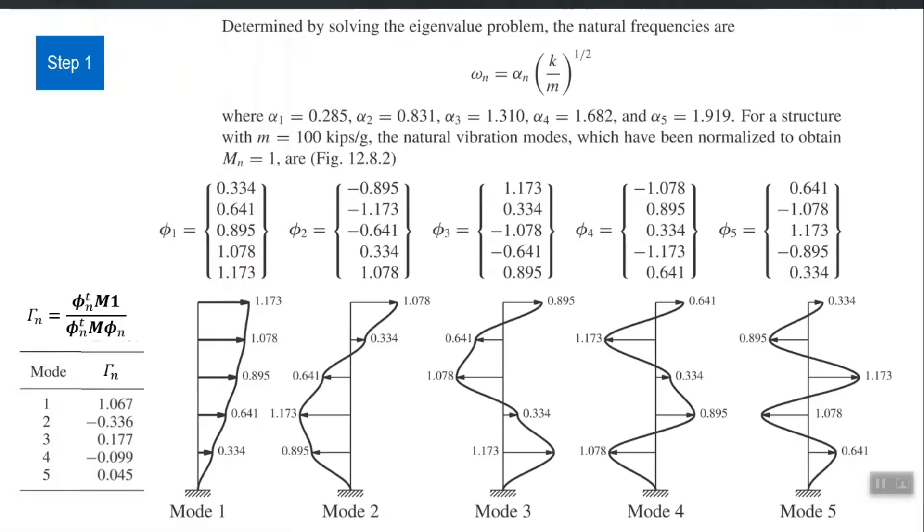So, we perform that and we calculate omega 1, omega 2, omega 3, omega 4, and omega 5, or first five time periods, and then we calculate five phi vectors. From phi 1 up till phi 5 we calculated and we plotted them also. These are the first five mode shapes, and since mass matrix is known, capital 1 vector influence vector will be simply 1, 1, 1, 1, 1. Everything is known.